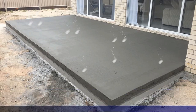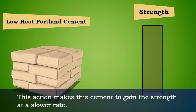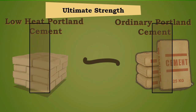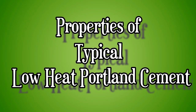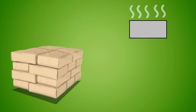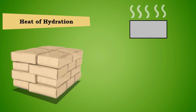This action makes the cement gain strength at a slower rate. However, the ultimate strength is the same as that of ordinary Portland cement. Properties of typical low heat Portland cement: the heat of hydration should not be more than 272 joules per gram at the end of 7 days.